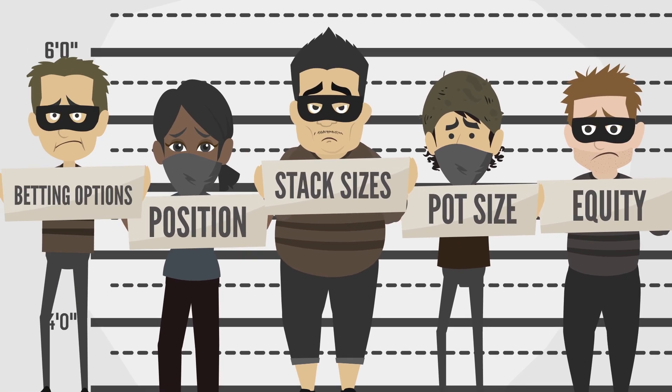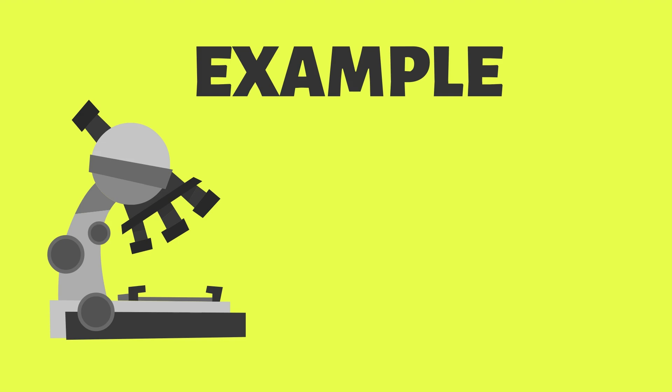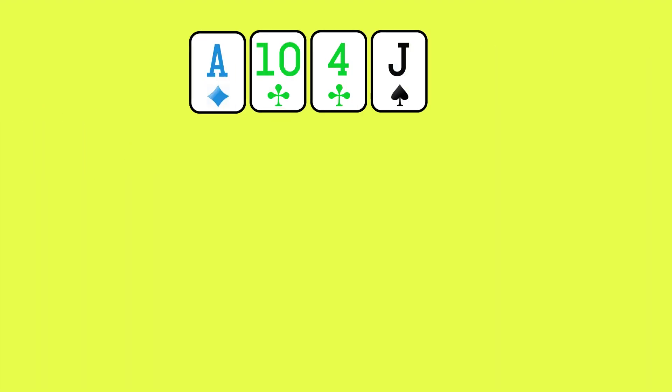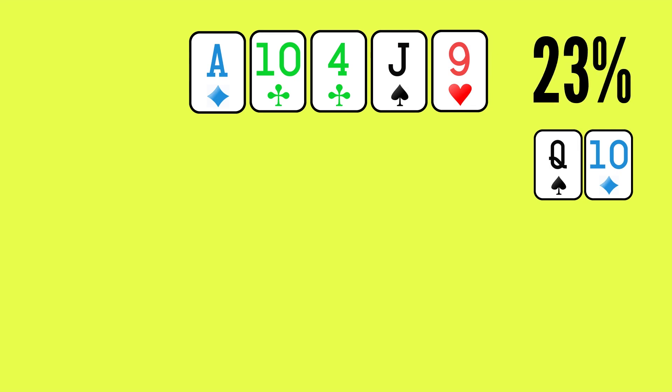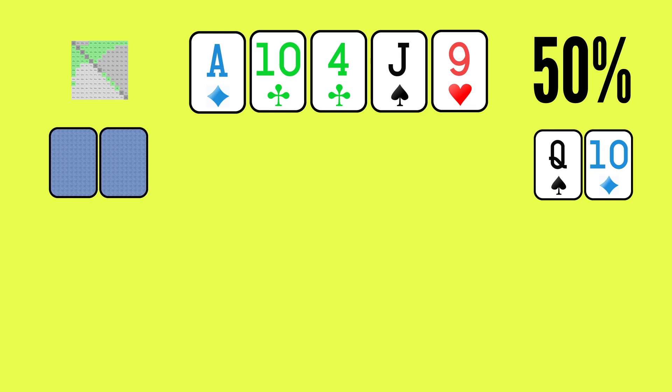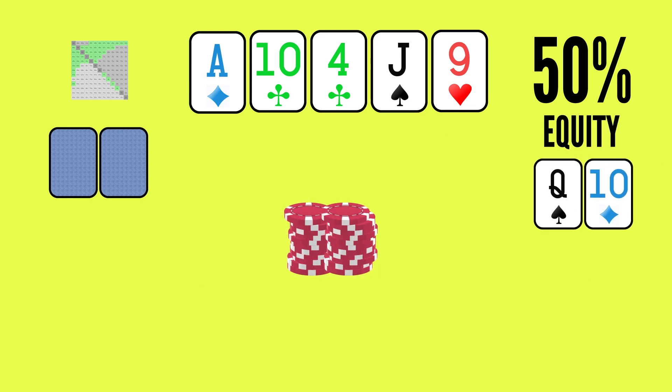Let's examine a simple scenario. Imagine we're on the river with a hand like middle pair, and we expect our hand to be the best 50% of the time against our opponent's range of hands. Since there are no more cards to come, this means our hand has 50% equity.